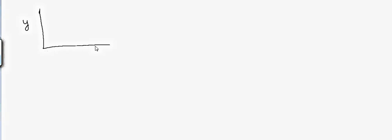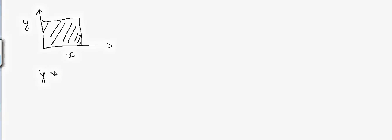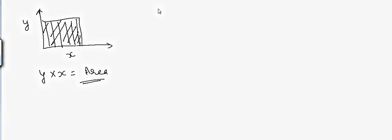Suppose I have a rectangle — this is our y and this is our x. We can draw a small rectangle here. The area of the rectangle is y times x. This is a simple calculation because y is constant for all the x values.